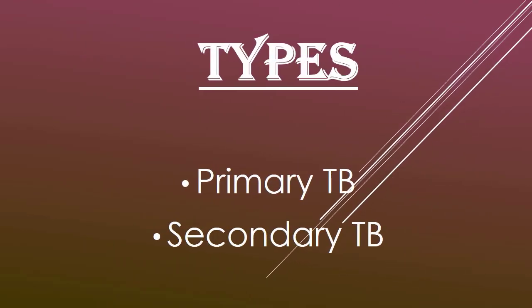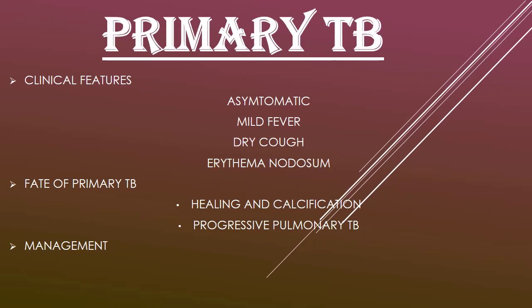There are two types of TB: primary TB and secondary TB, also known as post-primary TB. Primary TB develops in a previously unexposed, non-sensitized individual, usually in children. Primary TB infection usually occurs in the lung but also occurs in the tonsils or ileocecal region.